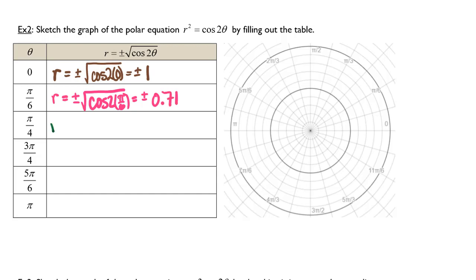The next substitution will be pi over 4, and we will have r equals plus or minus the square root of cosine of 2 times pi over 4.